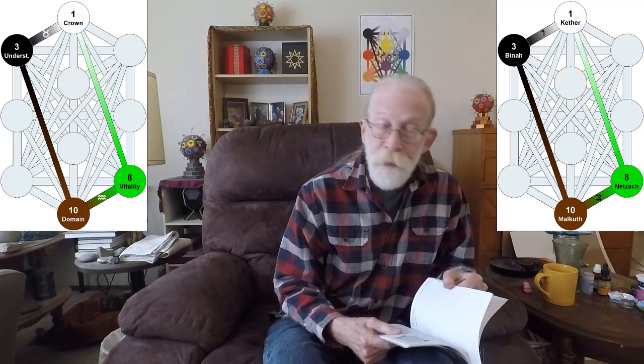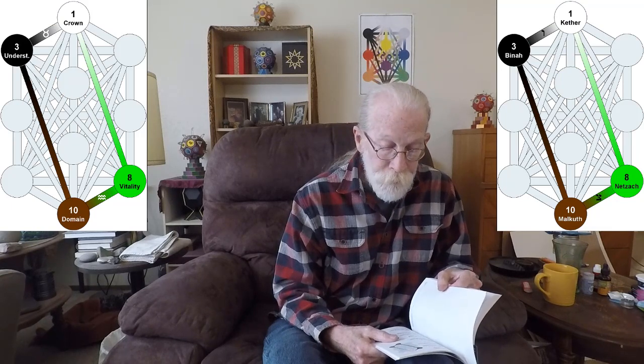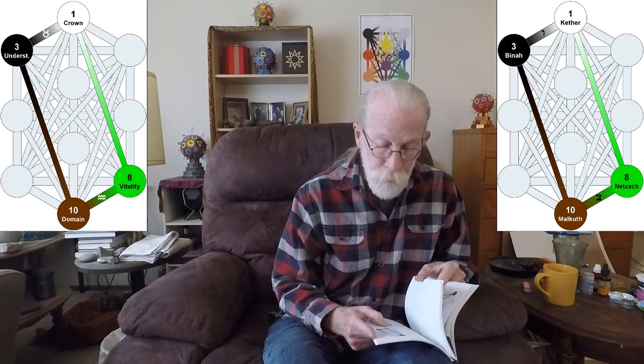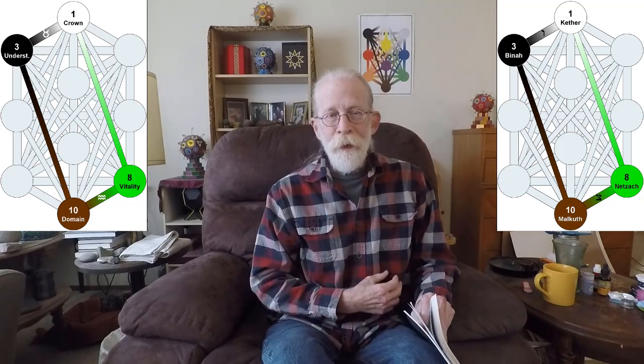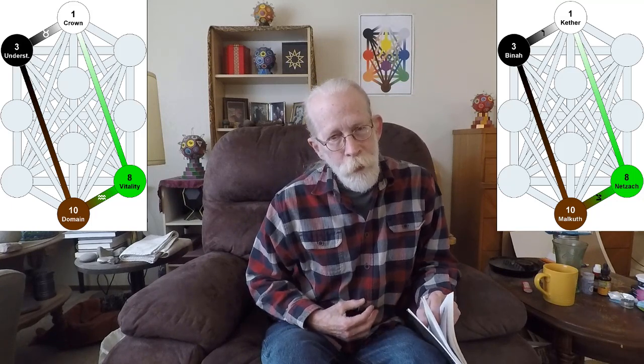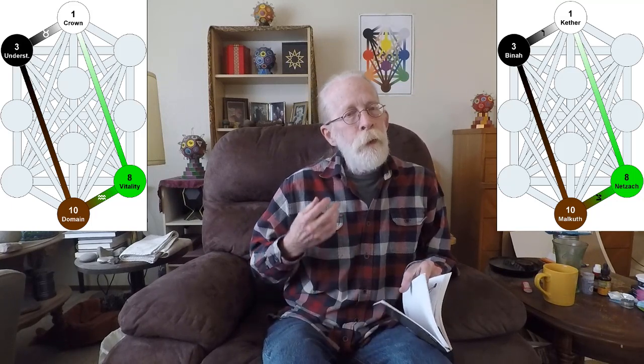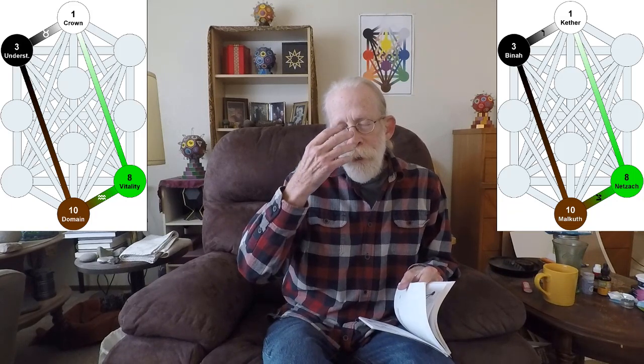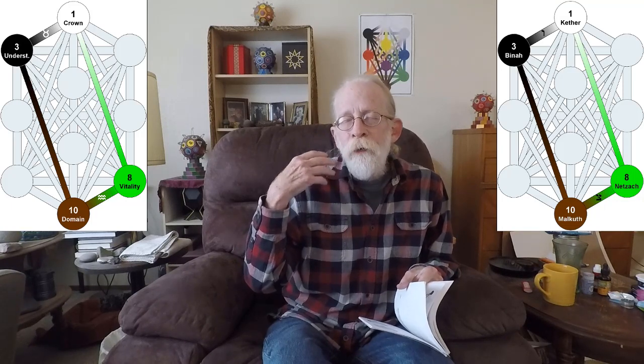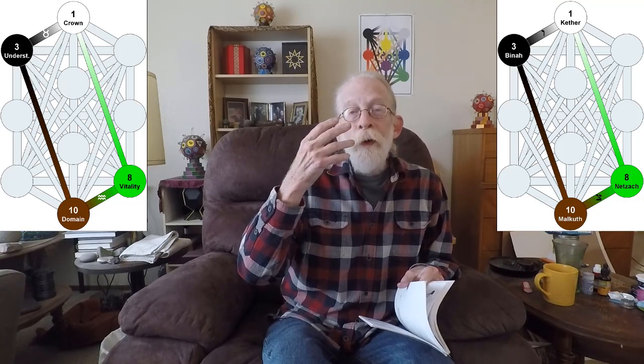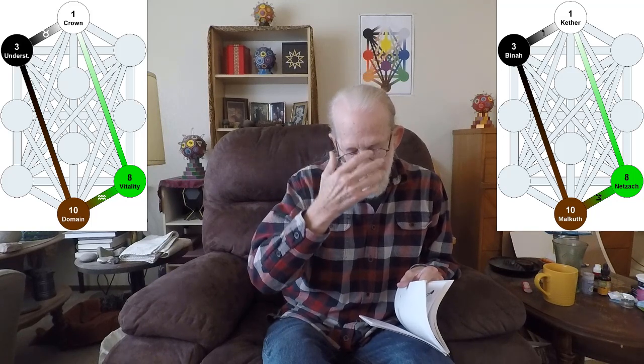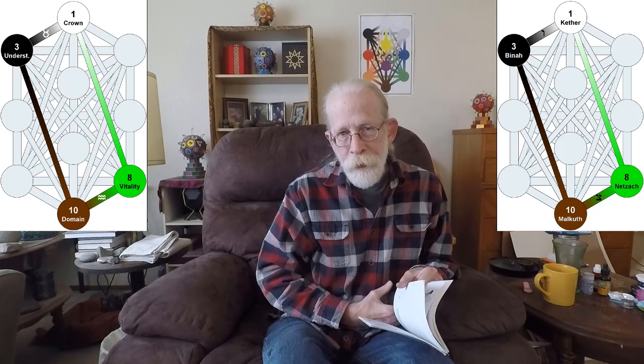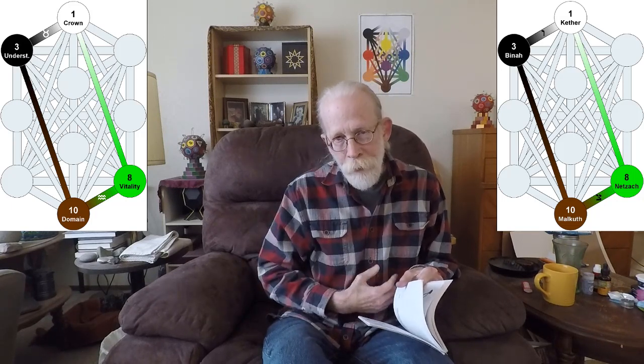The next gate is another quadrangle, gate number 153, and this goes from Netzach, down the path of Tzadi to Malkuth, up that hidden path from Malkuth to Bina, along the path of Vav, Taurus, up to Kether, and then down that hidden path from Kether all the way to Netzach, and then back around.